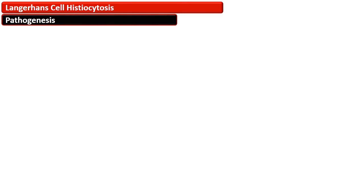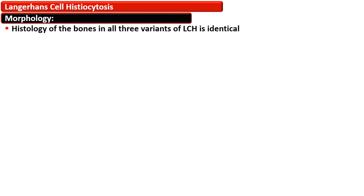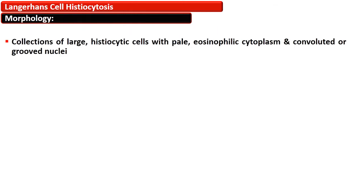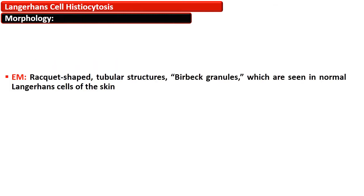These chemokine signals result in homing or collection of histiocytes. The morphological picture for all three variants of Langerhans cell histiocytosis is identical. There is a collection of large histiocytes with pale eosinophilic cytoplasm and convoluted or grooved nuclei. On immunohistochemistry, they are positive for CD1A, Langerin, and S100 proteins. On electron microscopy, there are racket-shaped tubular structures termed Birbeck granules.